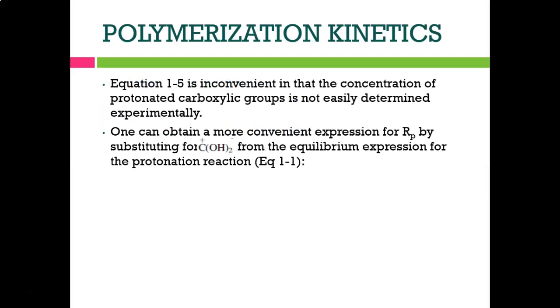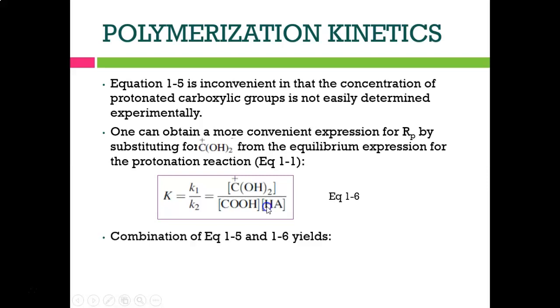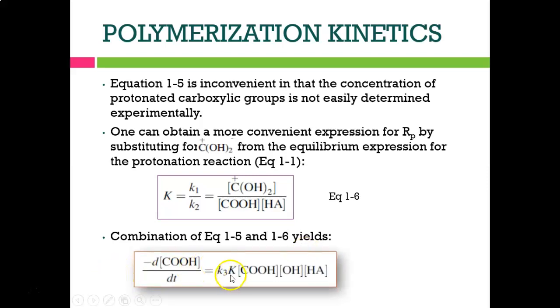We can obtain a more convenient expression for the rate of polymerization by substituting for [COOH2+] from the equilibrium expression for the protonation reaction. K1/K2 equals [COOH2+] over [COOH] times [HA]. When we combine equations 1-5 and 1-6, we produce Rp equals K3K[COOH][OH][HA].